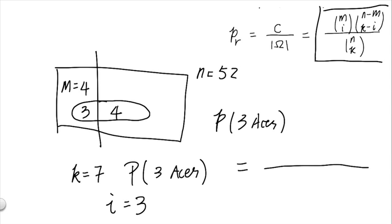In particular, we'll just have to substitute into the expression right here, the value of m equal to 4, n equal to 52, k equal to 7, and finally, i equal to 3.